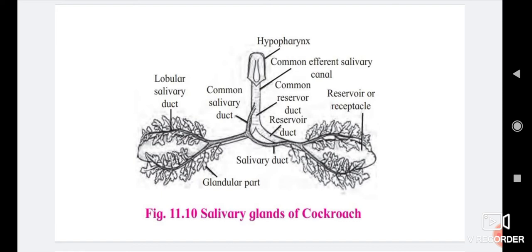The receptacle of each gland is a thin-walled, elongated, sac-like structure. Each receptacle has a duct. These ducts unite to form a common reservoir duct. Both the common salivary duct and common reservoir duct unite together to form a common efferent salivary duct. The efferent salivary duct opens at the base of the tongue or hypopharynx.